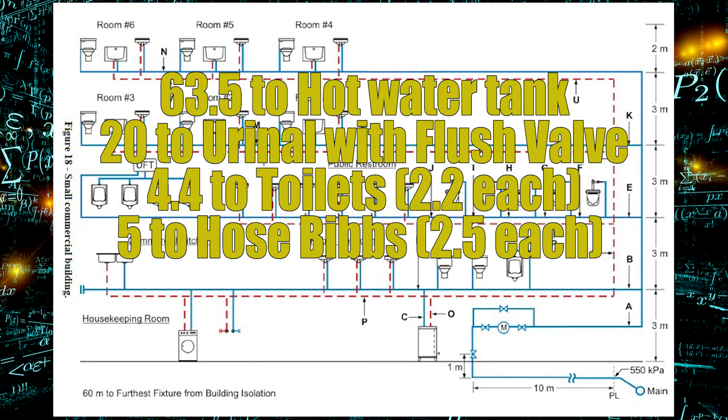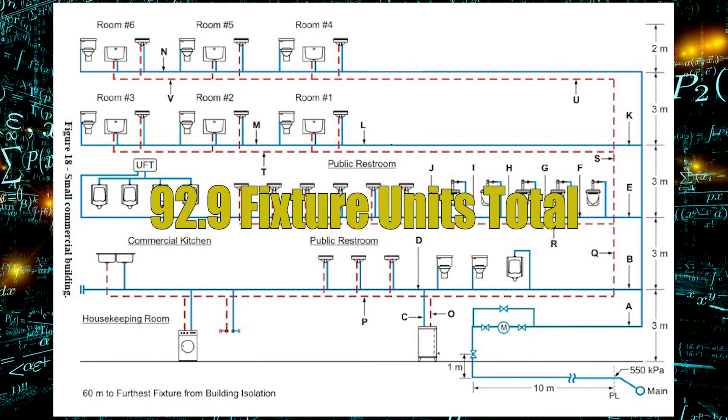So we are supplying 63.5 fixture units to the hot water tank. The urinal with a direct flush valve is 20 fixture units. The water closets are 2.2 fixture units each and the hose bibs are 2.5 fixture units each. When we add those up we get 92.9 fixture units.